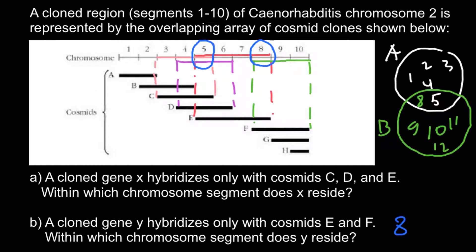So our answer for this question would be fragment 5 of the chromosome, which would contain this fragment to which a certain gene would hybridize.